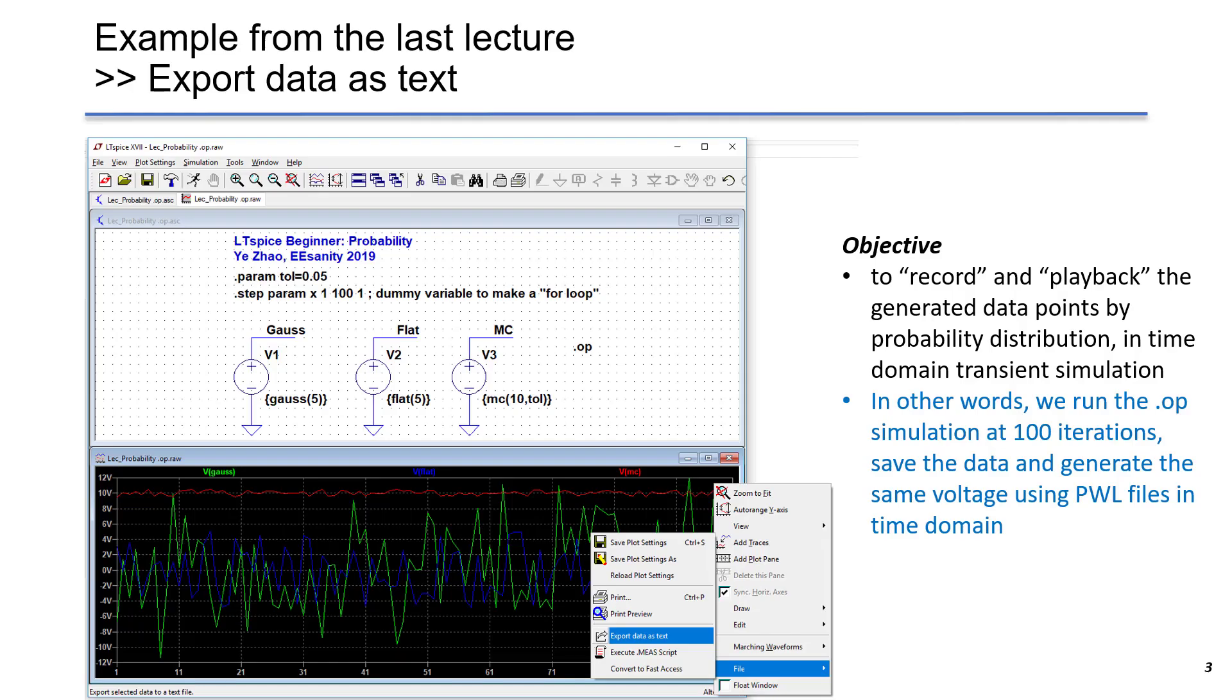Here is the first example. As shown in the slides, we will use the same schematic as shown before in the previous lectures. The objective is to record and play back the data generated by the probability distribution. We use the same data created by the Gaussian distribution in the time domain transient simulation. In other words, we run the DC operating point simulation for 100 times, and we save the data, and we generate the same voltage using PWL files in time domain.